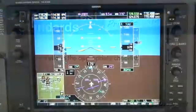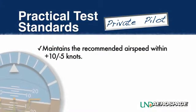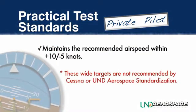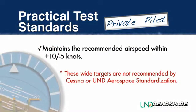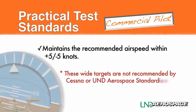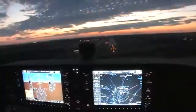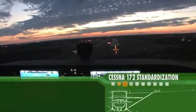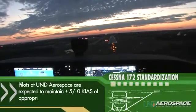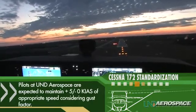They complete the appropriate checklists. Private pilots must maintain the recommended airspeed within plus 10 and minus 5 knots. This large window, however, is not recommended by Cessna or UND standardization. Commercial pilots are required to maintain plus 5 and minus 5 knots. At UND Aerospace, private and commercial pilot applicants are expected to maintain plus 5 and minus 0 knots of the appropriate final speed considering gust factor in the Cessna 172.